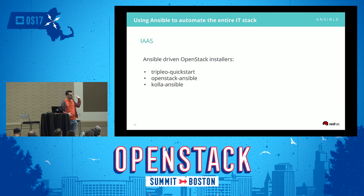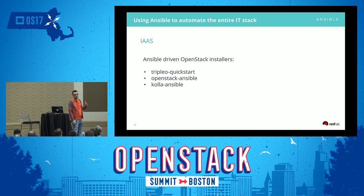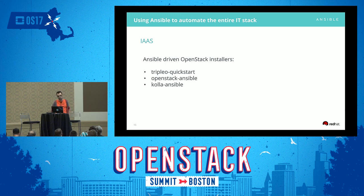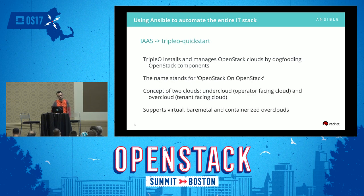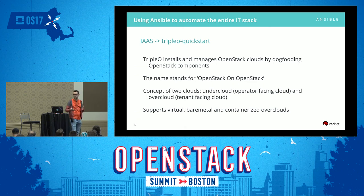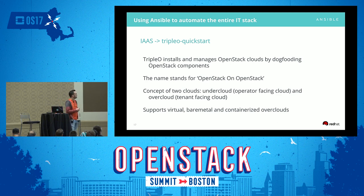Now that we've covered the hardware layer, we move up to IaaS — and obviously we're going to talk about OpenStack. How can we as operators use Ansible to deploy OpenStack? There are three main projects: TripleO Quickstart, OpenStack-Ansible, and Kolla-Ansible. TripleO Quickstart is an Ansible wrapper that uses TripleO itself. TripleO is an end-to-end solution to install, configure, manage, and monitor an OpenStack cloud. The name stands for OpenStack On OpenStack. It has the concept of two clouds: an undercloud — an all-in-one OpenStack cloud — which is then used to deploy the overcloud, which is your tenant or end-user facing cloud.